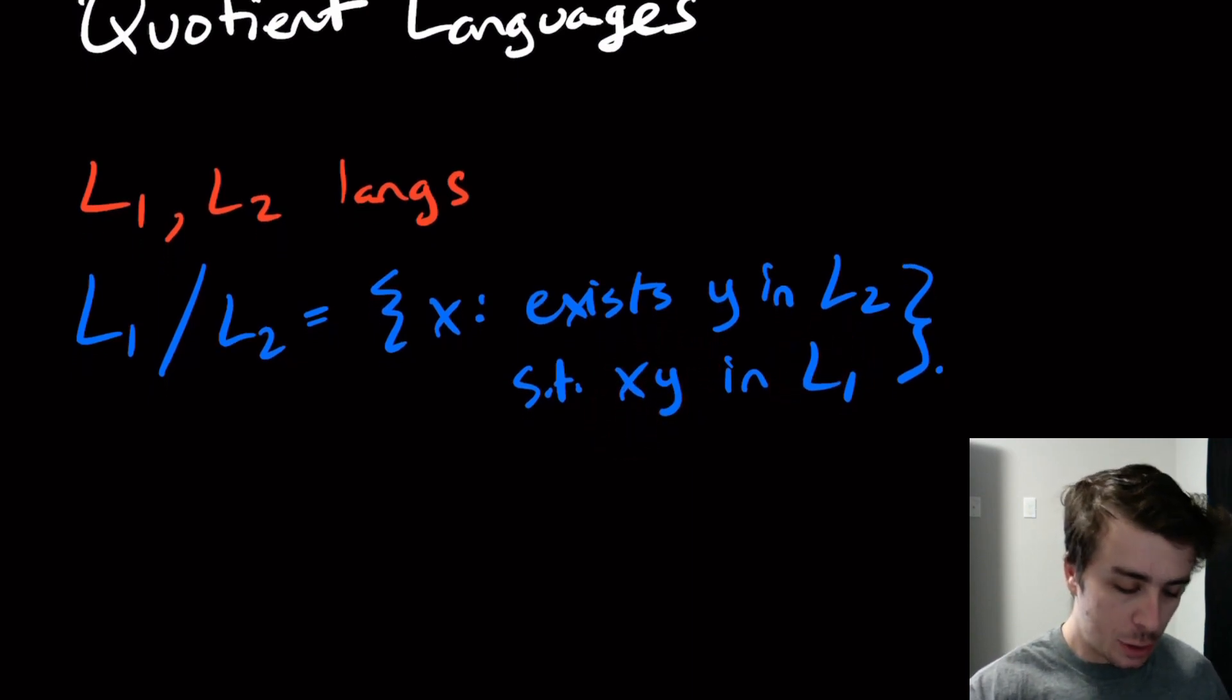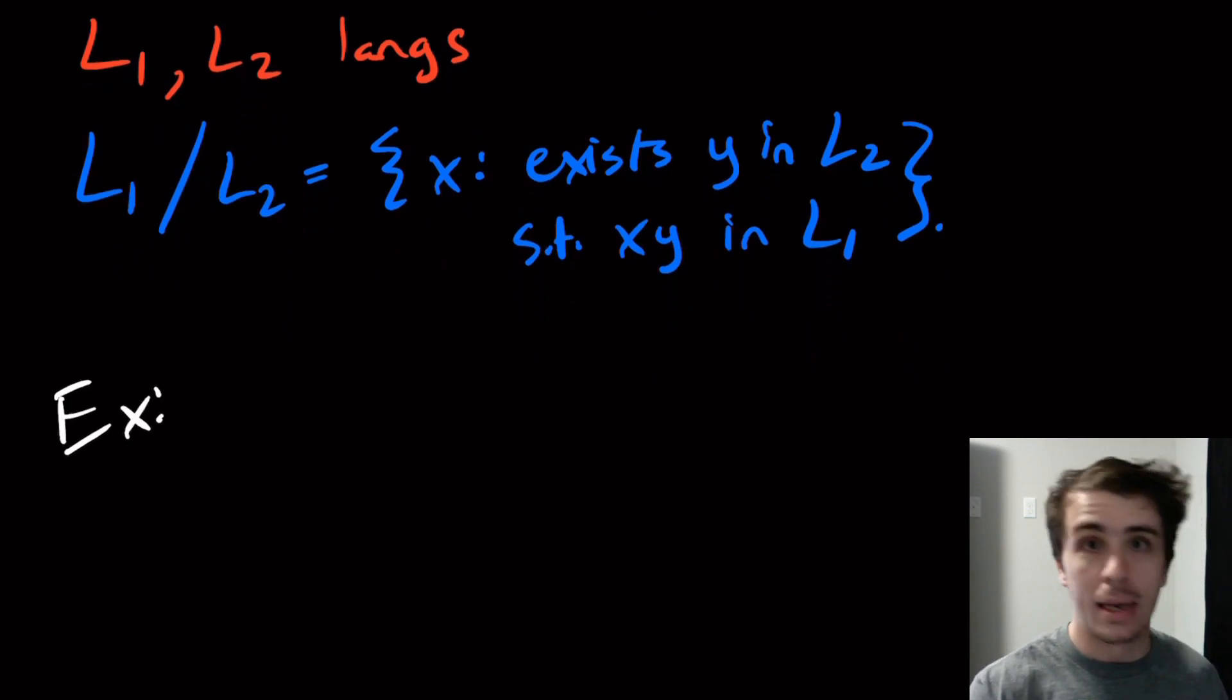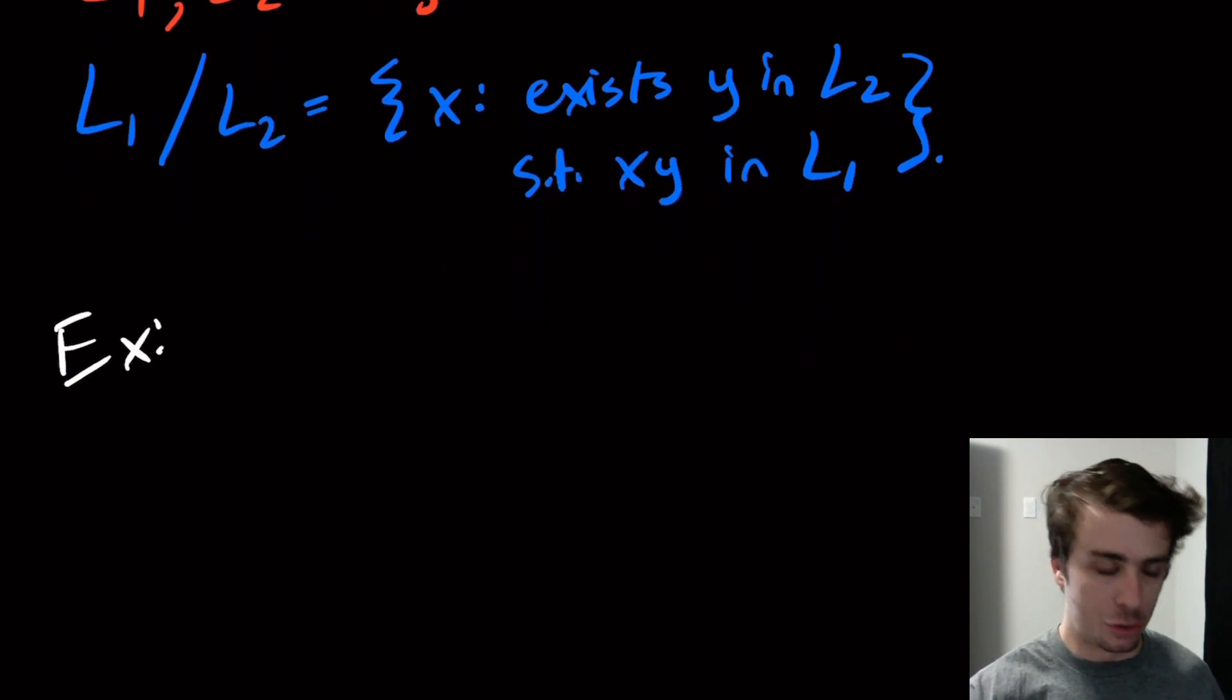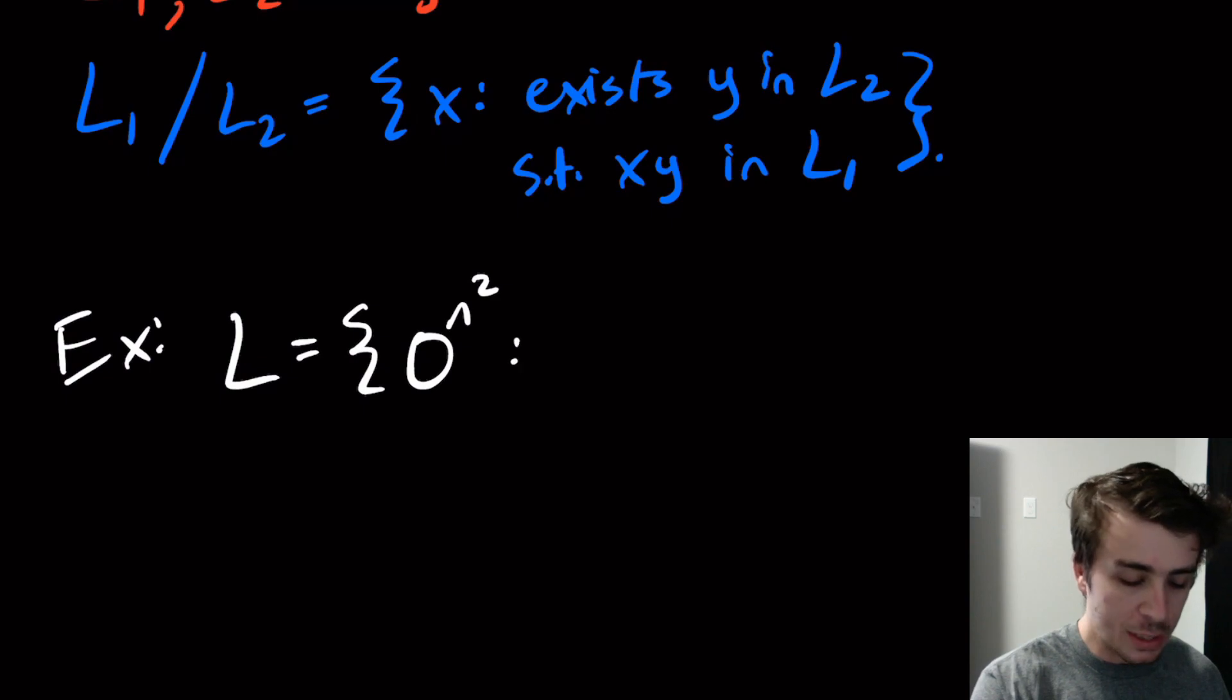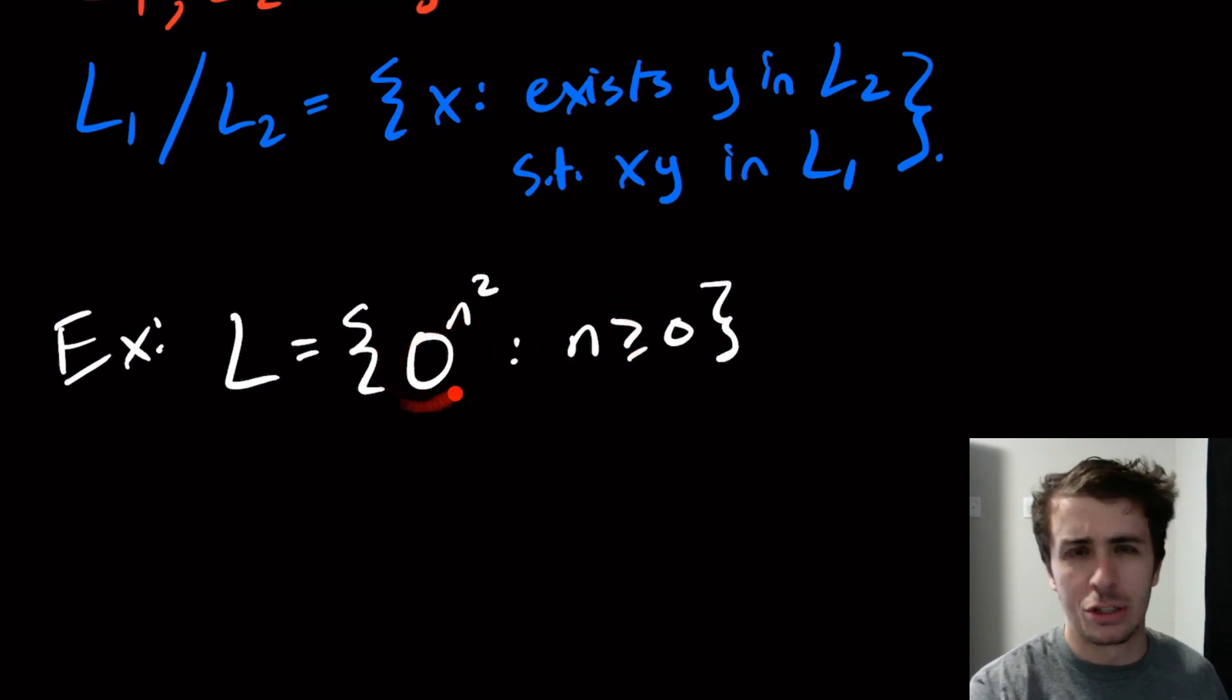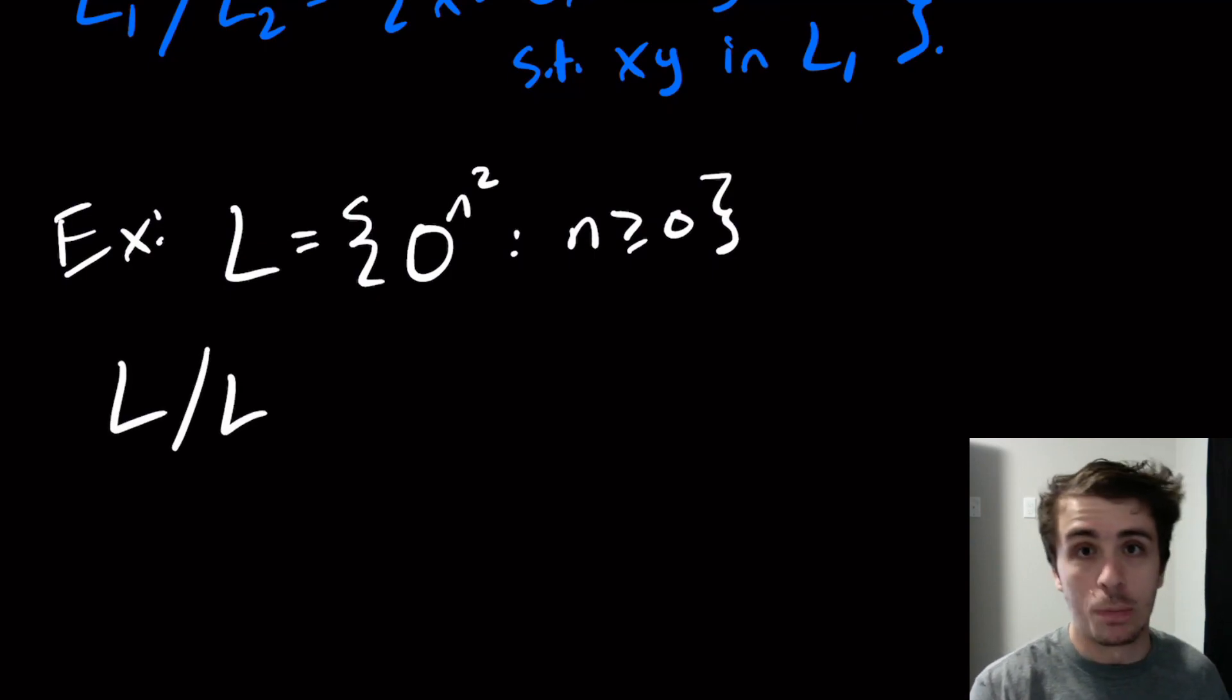Just to give you an example - here's an example and I invite you to actually prove that this is true. Let L to be all the perfect squares, or the strings of length a perfect square, and they're all zeros. Then we could in theory divide the language by itself.